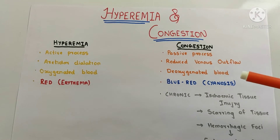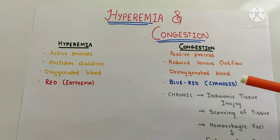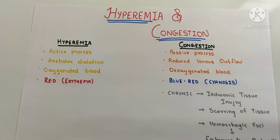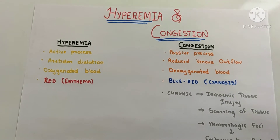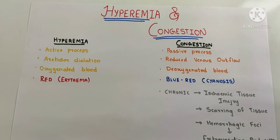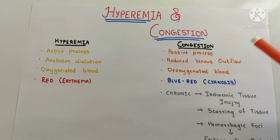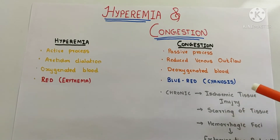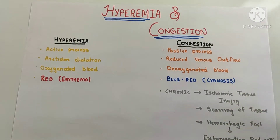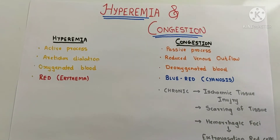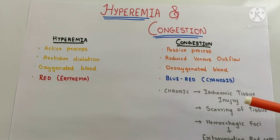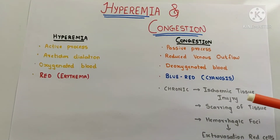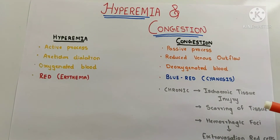Due to venous obstruction there is accumulation of deoxygenated blood in the tissue. Hence the appearance becomes bluish, which is known as cyanosis. When this congestion becomes chronic, there can be ischemic tissue injury because the blood tissue is devoid of oxygen. Hence there can be ischemic injury, and further it can cause scarring of the tissue.